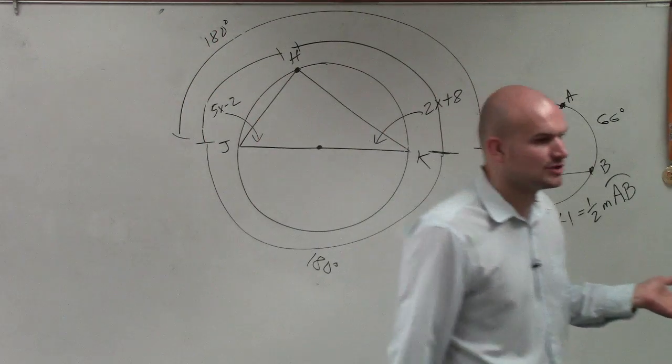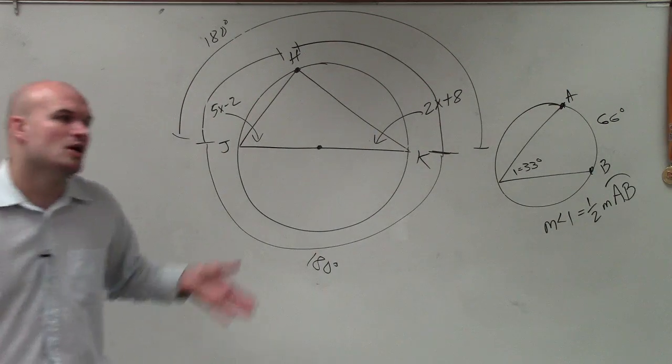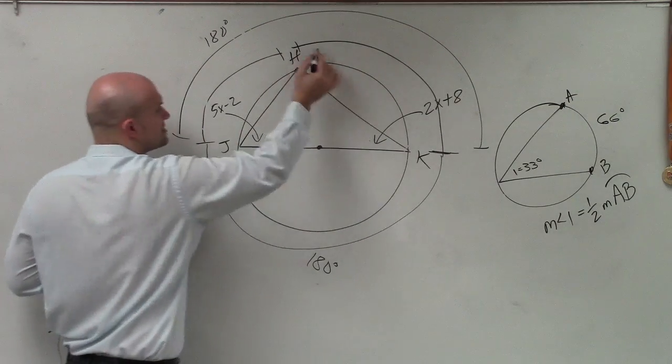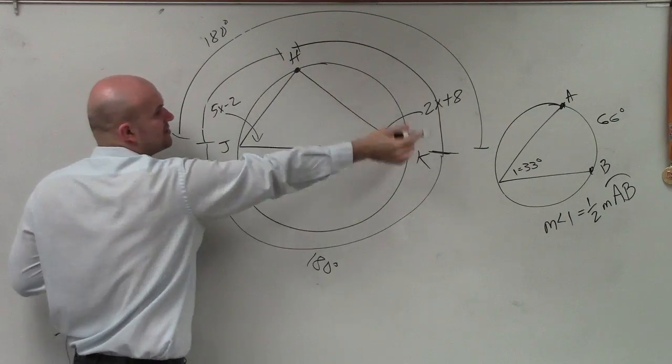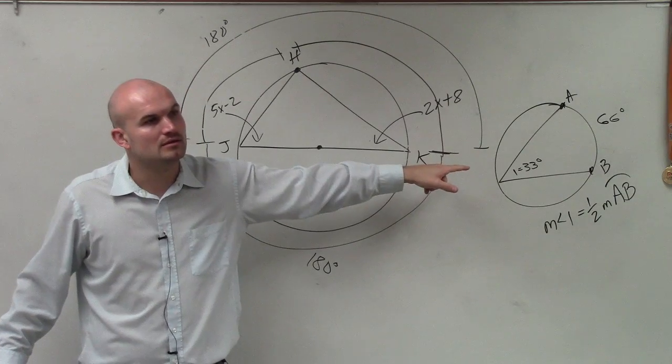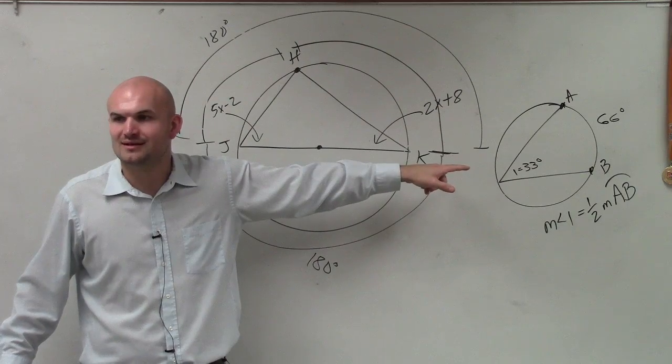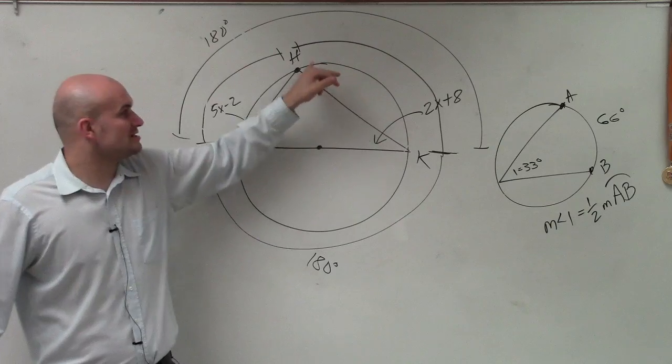So when we're trying to construct an equation to solve for our missing variables, what we notice is the measurement of these two arcs add up to... Jake, what do these two arcs add up to? This arc plus that arc. I don't know why I want to keep on calling you Jake. Maybe that's it. So I guess, Jake, I'll ask you the question then. What do these two arcs add up to?